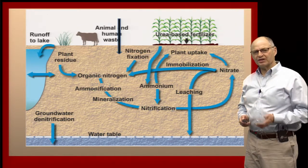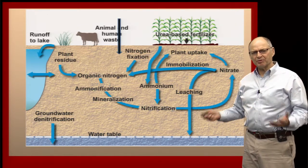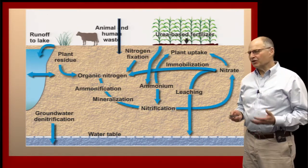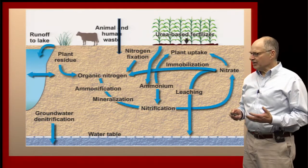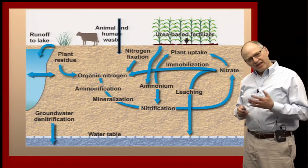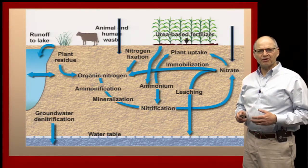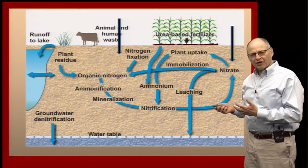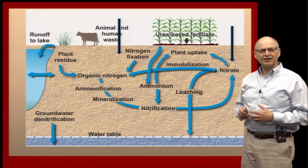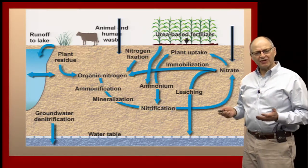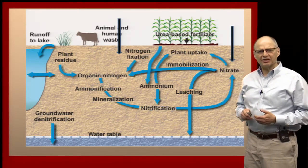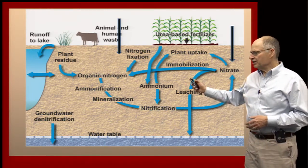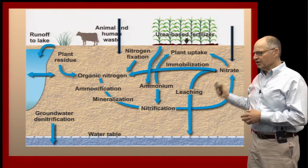If an animal drops manure on a field, that's organic nitrogen, and that organic nitrogen will go through a process. If we put a fertilizer on the field in a nitrate form, then it starts the nitrogen cycle at the point where the nitrates are.